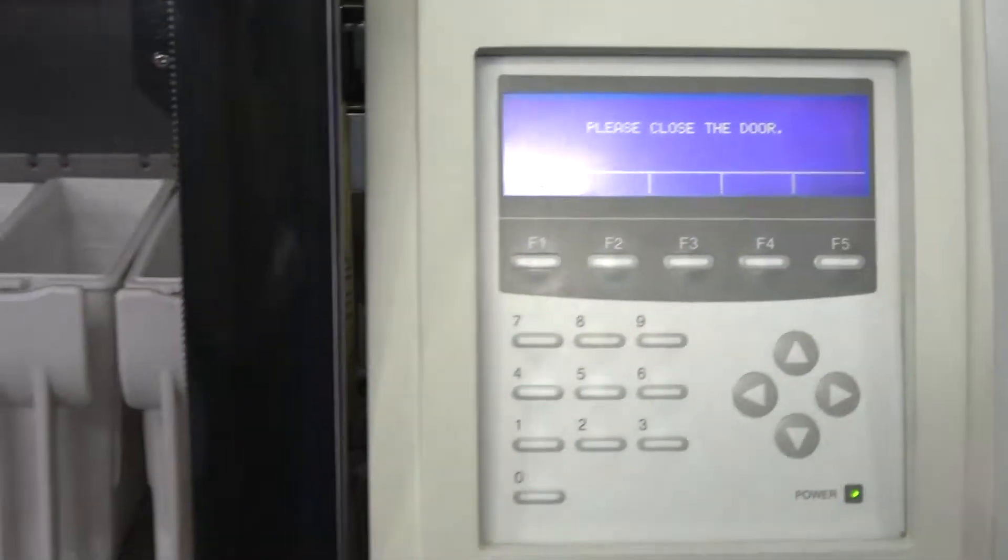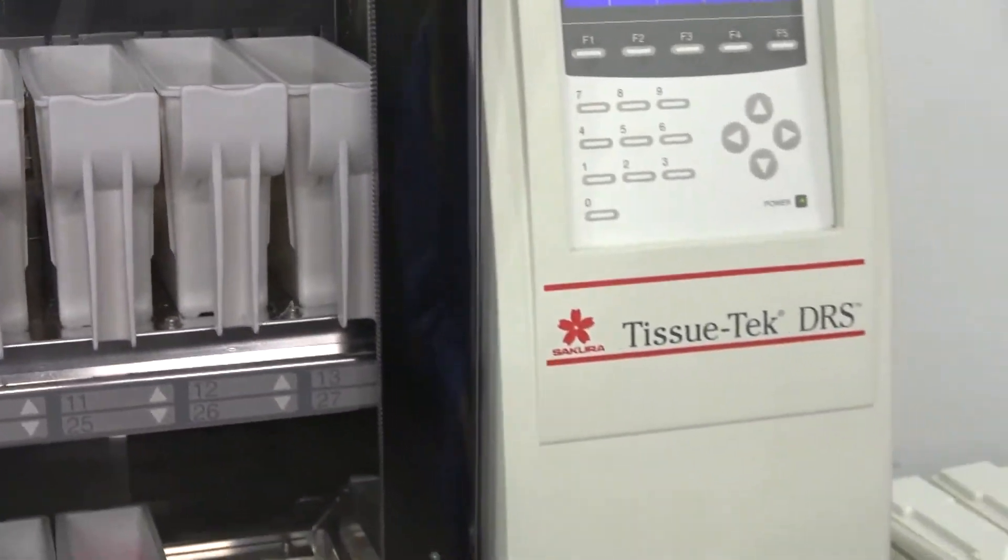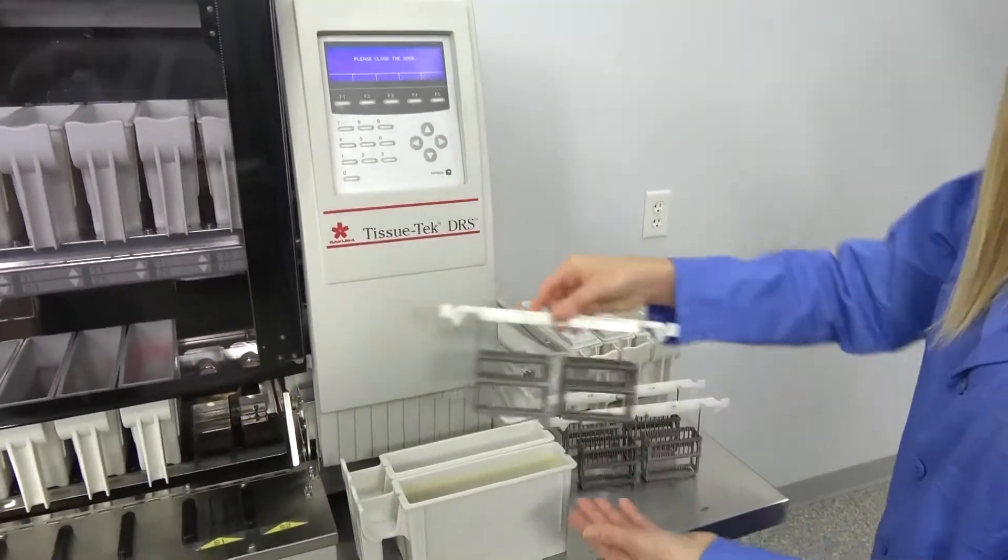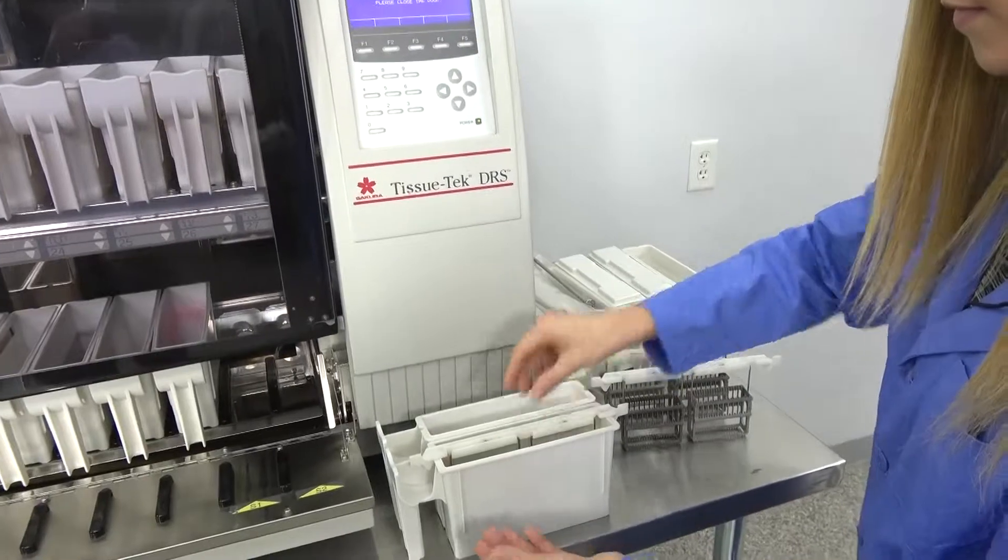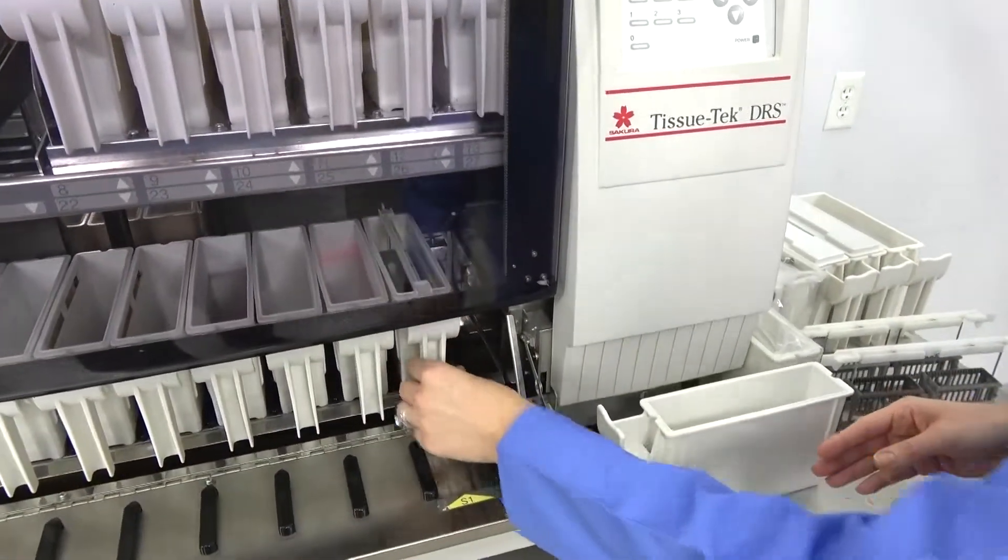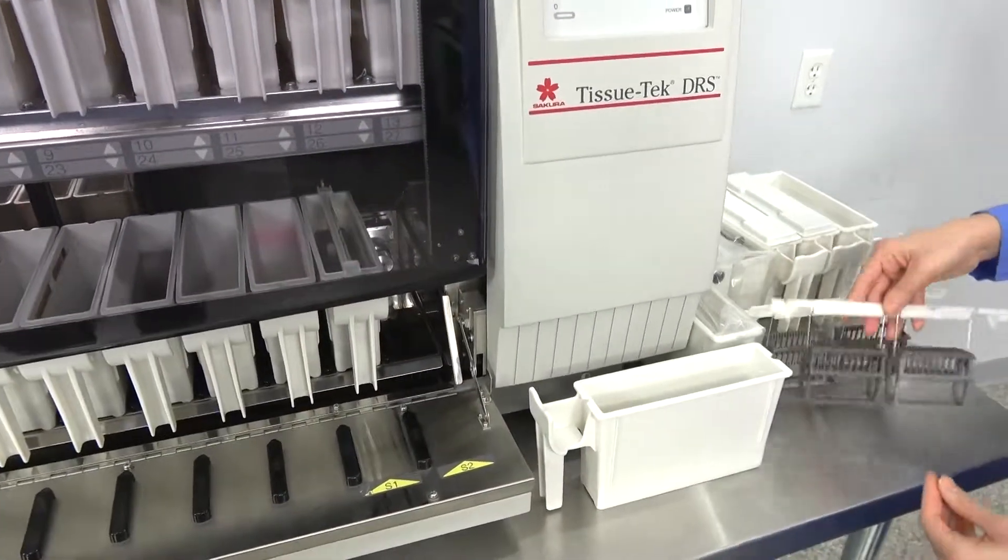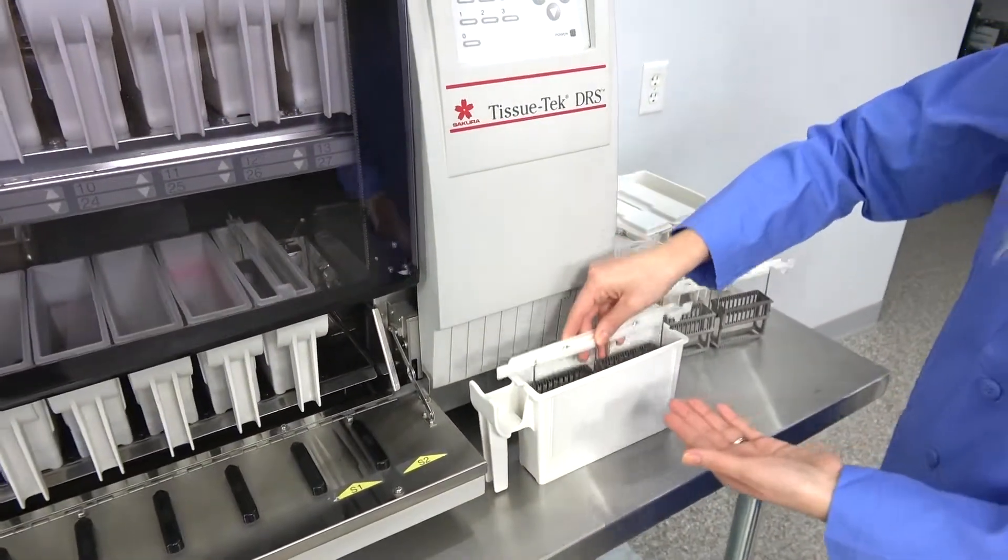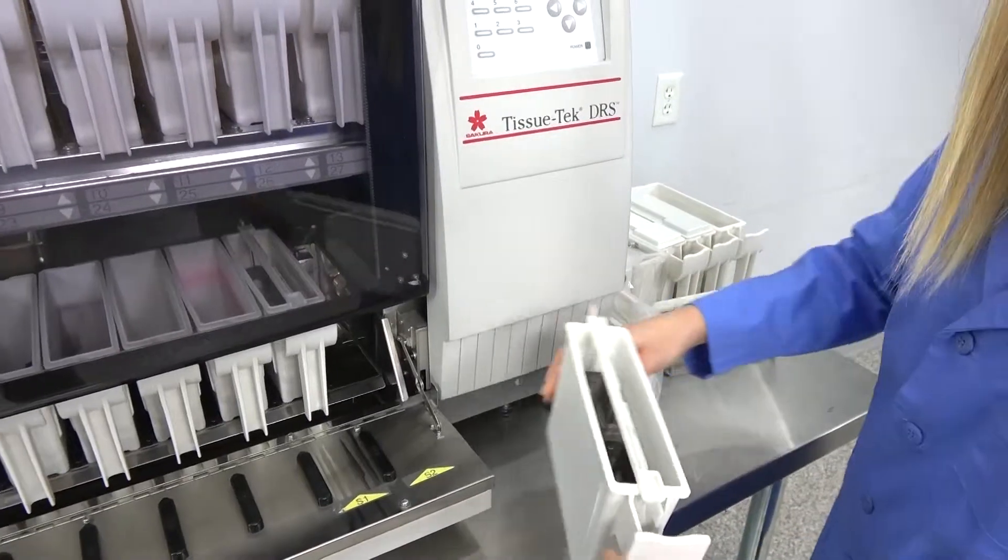So we're going to start that and here you can see the slide baskets. We are going to put that in our S1 location. And then I'm also going to insert the S2 location now so I can close the door and we'll start the run.